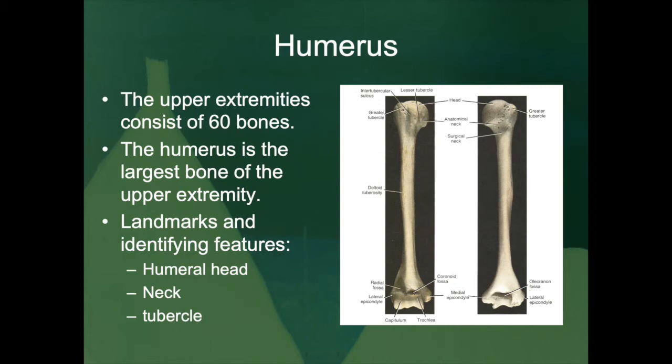In this lecture we're going to focus more on the long bones of these upper extremities. The humerus, or arm bone, is the longest and largest bone of the upper extremity. It articulates proximally with the scapula and distally in the elbow with both the ulna and radius.